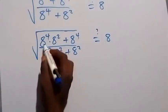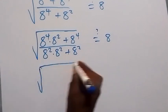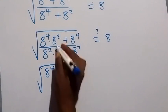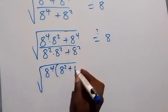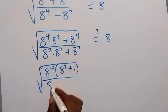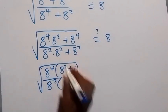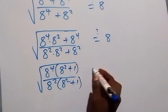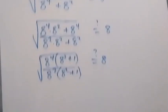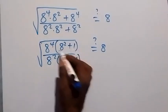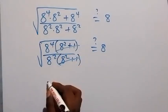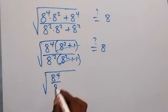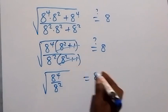Then, we can factor 8 raised to the power 4 out from here. We have 8 raised to the power 4 into bracket 8 squared left here, plus 1, divided by — here 8 squared is common — we have 8 squared left here, then plus 1 will be left here. Is this equals to 8 from here? These are the same thing — they cancel out, and we are left with square root of 8 raised to the power 4 divided by 8 raised to the power 2. Is this equals to 8?